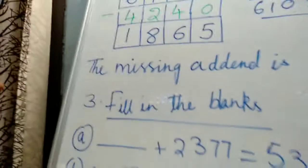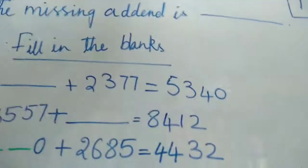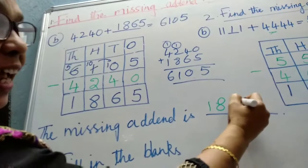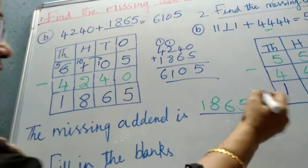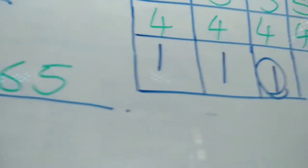1 digit is missing. So write this digit here. Write the missing addend. What is the missing addend? 1, 8, 6, 5. Write the missing digit. What is the missing digit? 1. You have to write down 1 like this.